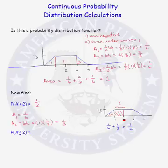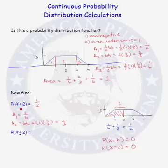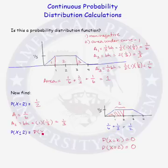The reason is that in a continuous distribution, the probability that x equals any particular value is always 0. So the probability that x equals 2 is 0 — the reason has to do with calculus, which is beyond the scope of this course. Therefore, the probability that x is less than or equal to 2 equals the probability that x is less than 2, which we already calculated to be 1/2.